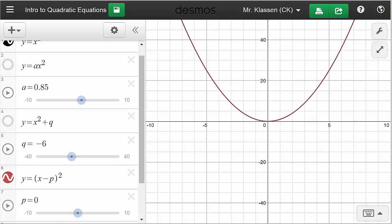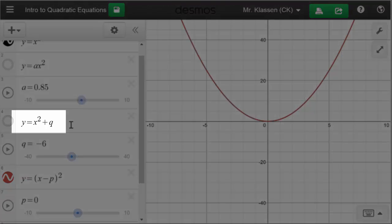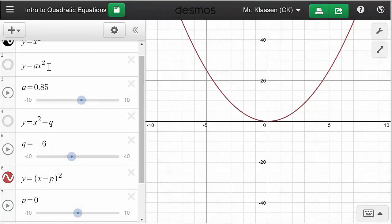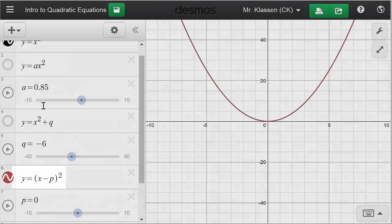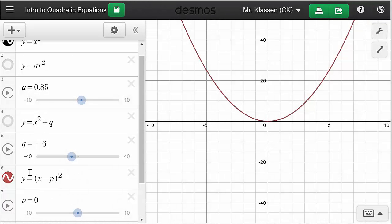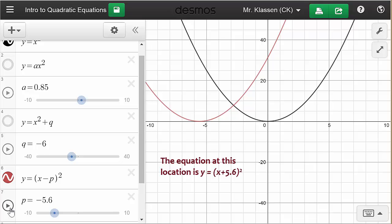Now we're going to try one more transformation. Rather than adding something to x squared or multiplying x squared by a value, we're going to first subtract a value from x before we square it. So I've got x minus p all squared. What happens as p increases? You can see that for positive values of p, the parabola is translated p units to the right. And for negative values of p, the parabola is translated p units to the left. Right here, when p is negative 5.6, it has been moved 5.6 units to the left.